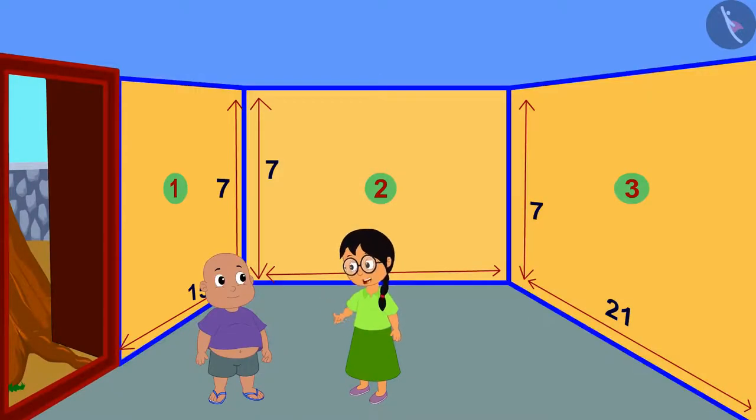But, which of these three walls is the wall with the most area? Meenu asked Bablu.